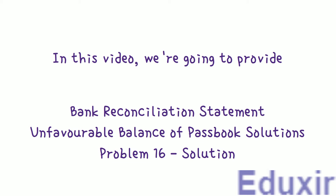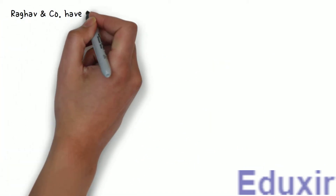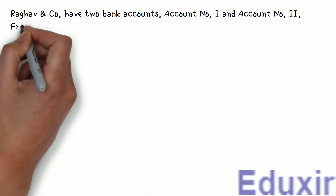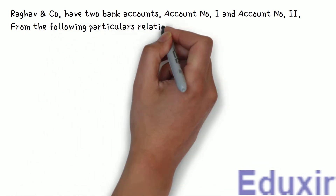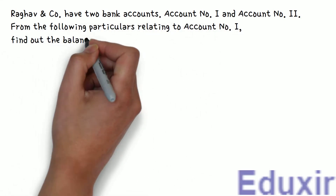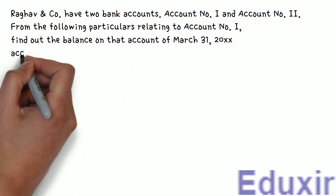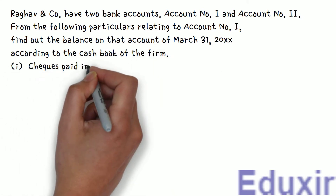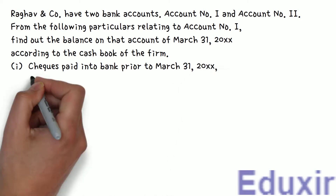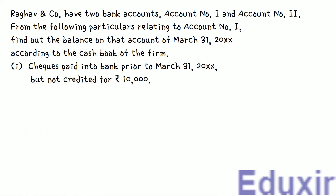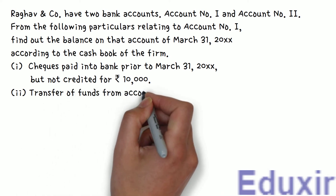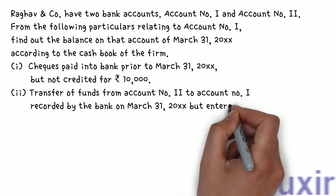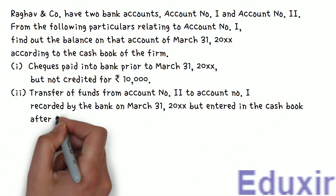The problem statement is as follows. Raghava & Co have two bank accounts: account number one and account number two. From the following particulars relating to account number one, find out the balance on that account as of March 31st, 2000+, according to the cashbook of the firm. First, checks paid into bank prior to March 31st, 2000+ but not credited, for 10,000 rupees. Second, transfer of funds from account number two to account number one, recorded by the bank on March 31st, 2000+ but entered in the cashbook after that date, for 8,000 rupees.